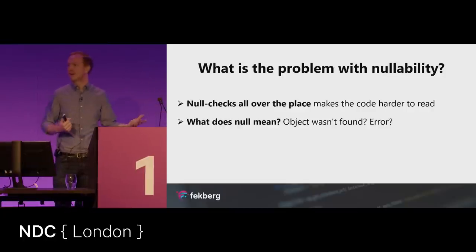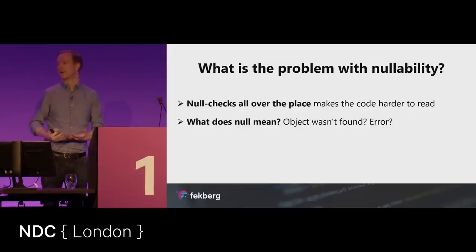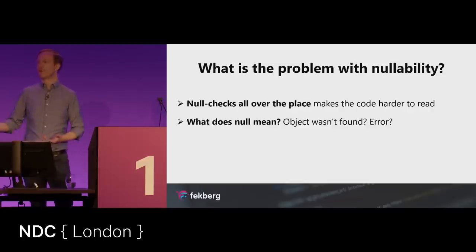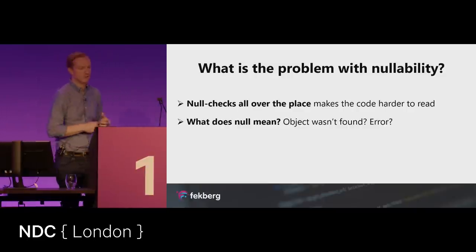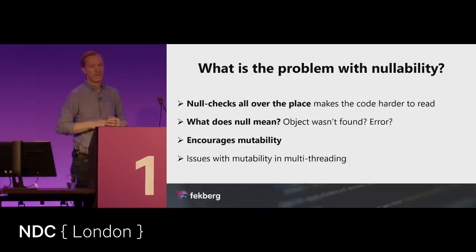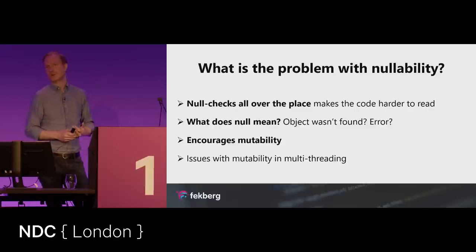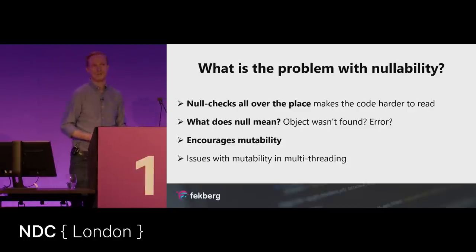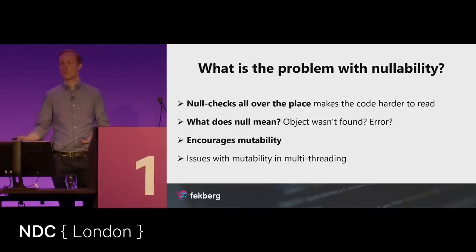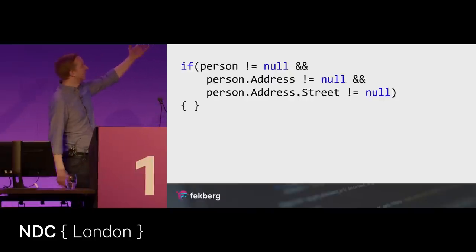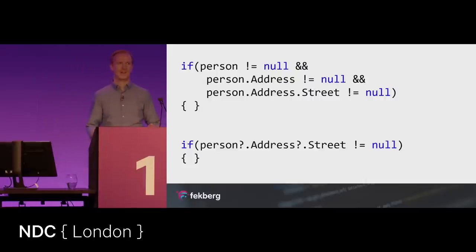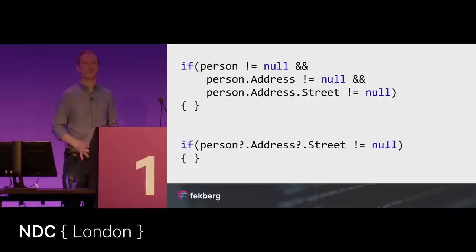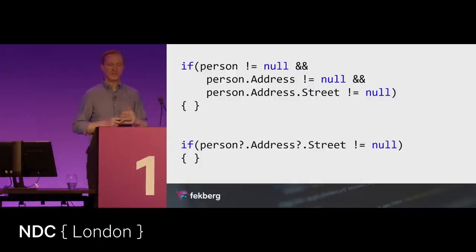If a method returns null, did something happen? Was there a problem? If a database query returns null, does it mean the record didn't exist or that there was a problem in the method? Null encourages mutability and causes issues in multi-threaded or asynchronous applications. We want to avoid nulls and get help from C# to tell us when there might be a problem. We can simplify null checks using the null conditional operator or pattern matching — the solution is to enable a nullable context.